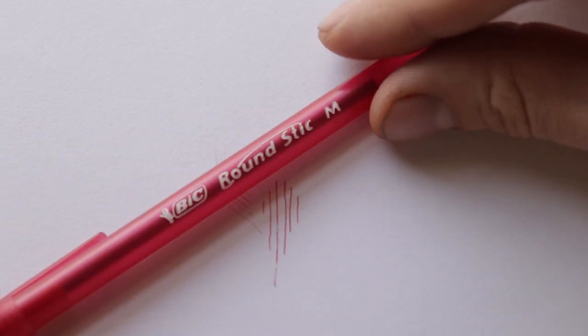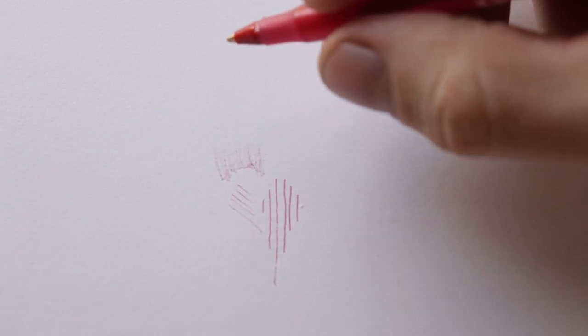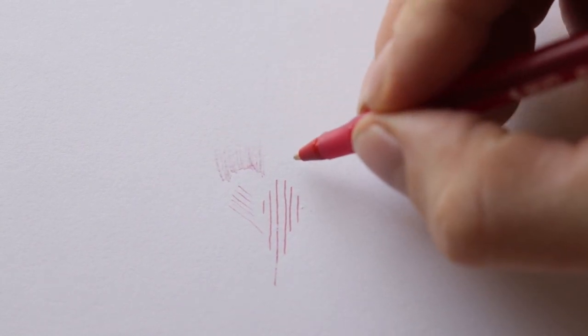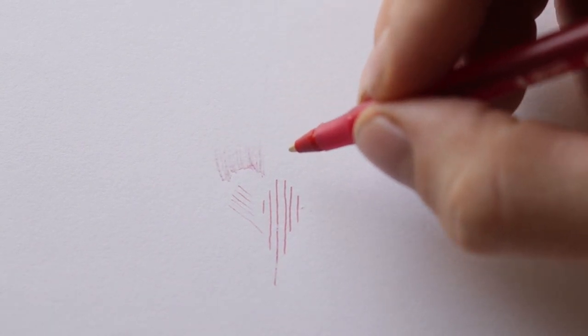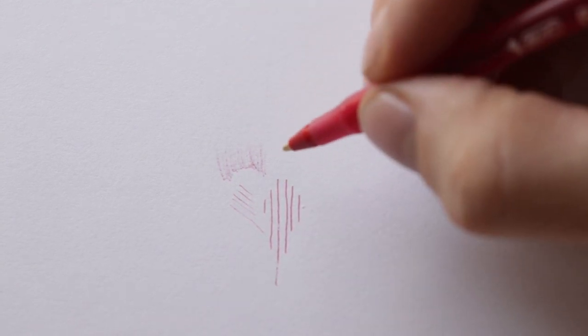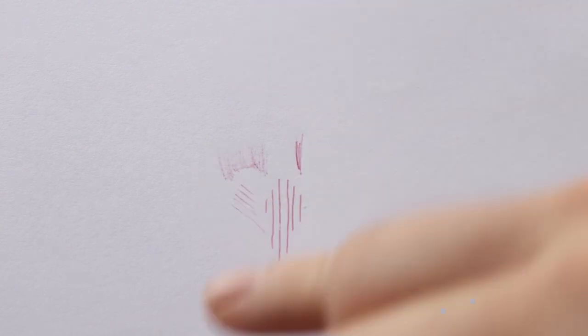And also with this when you're writing you don't have to worry about smudging as much as you do with the gel pen. I'll give an example of that. So what I'm going to do is I'm going to draw a line, then I'll run my hand across it and we'll compare the smudging. Very little smudging at all, so now let's test the gel pen.